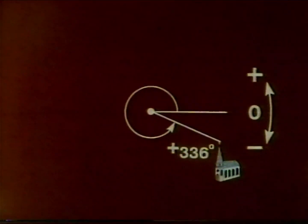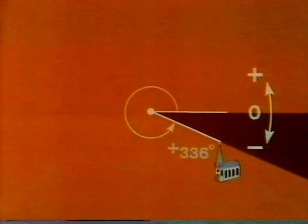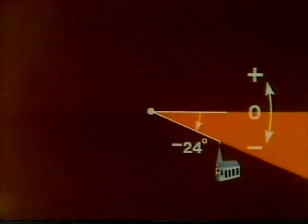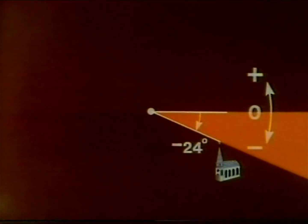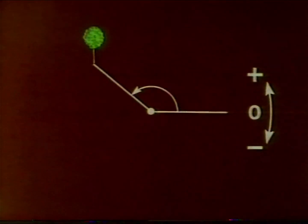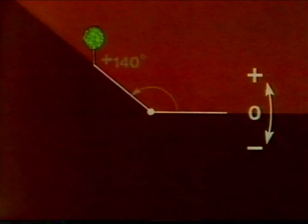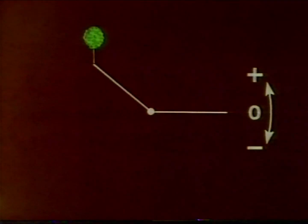The church is at an angle of 336 degrees, or minus 24 degrees. The tree is at an angle of 140 degrees, or minus 220 degrees.